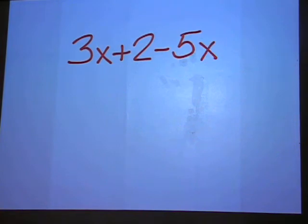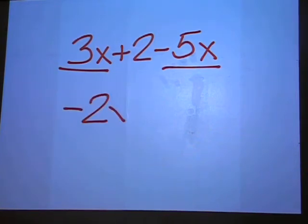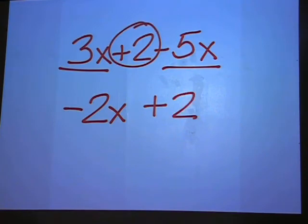For example, if you have 3x plus 2 minus 5x, make sure you know that you can add or simplify 3x minus 5x. 3x minus 5x is a negative 2x. You can think of it as 3x plus 5x. That's still a negative 2x. And this plus 2 just stays along.